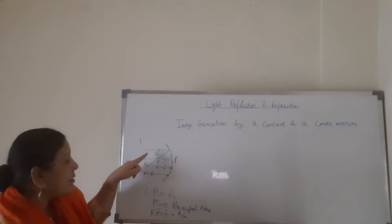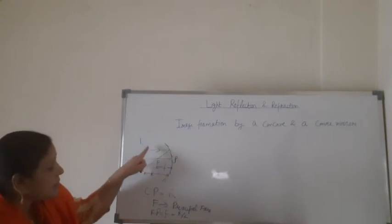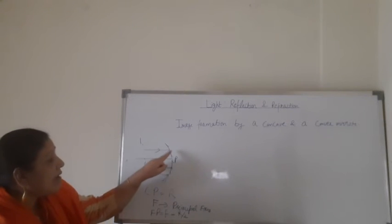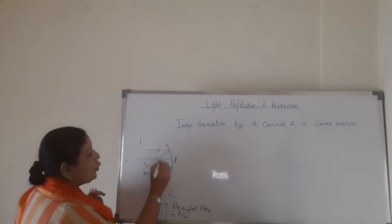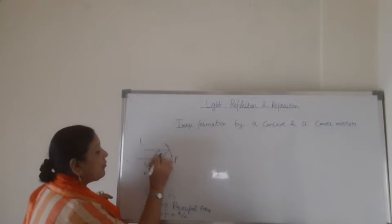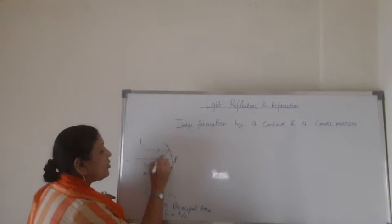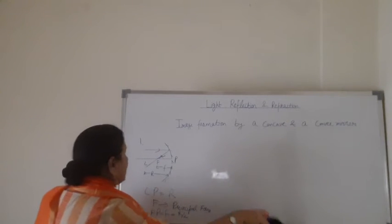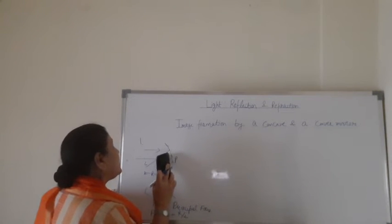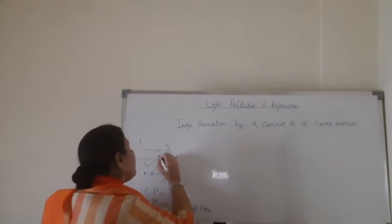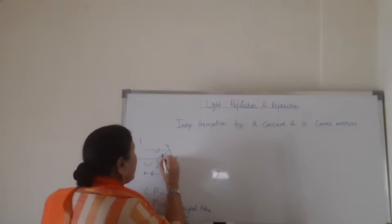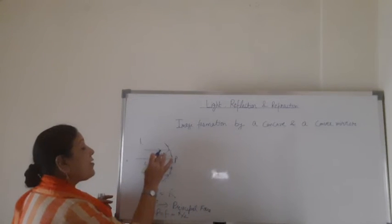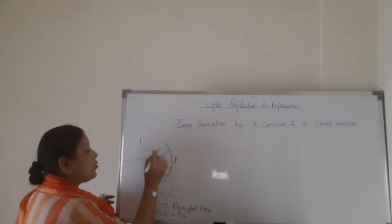Coming back to the main point: the first ray comes parallel to the principal axis. This is the incident ray, and after reflection it goes through F. Don't ever forget to put the arrows showing the direction of the ray. After reflection it goes back through F like this.